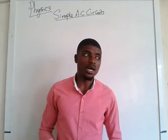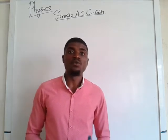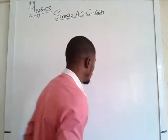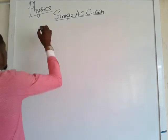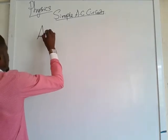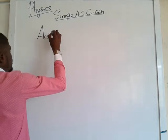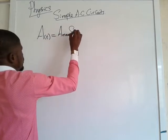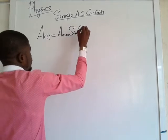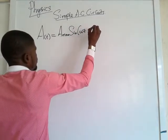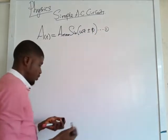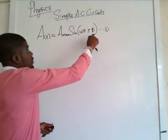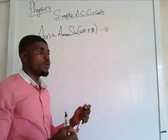At this point, we want to write down the general equation — which I call the template equation for AC circuits. So let's begin. Let A as a function of T equal A_maximum sin(ωT ± φ). Let's call this our equation number 1. This is a template equation that fits every sinusoidal waveform.